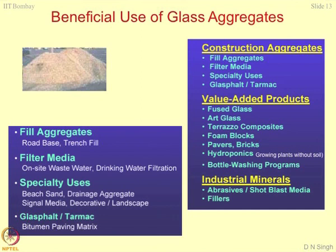An interesting subject on which some people are working is hydroponics — growing plants without soil. Some hotels use pebbles and gels for creating plants. Silica is a very active material, and wherever you have silica, it allows growth of microbes, and on those microbes plants survive. This is a good example of how plants can be grown without using soil. Different types of bottle-cleaning programs can also use glass material as an abrasive — it has very high abrasive value. You can make a slurry and use it for washing purposes, not dish washing because of its abrasive effect.